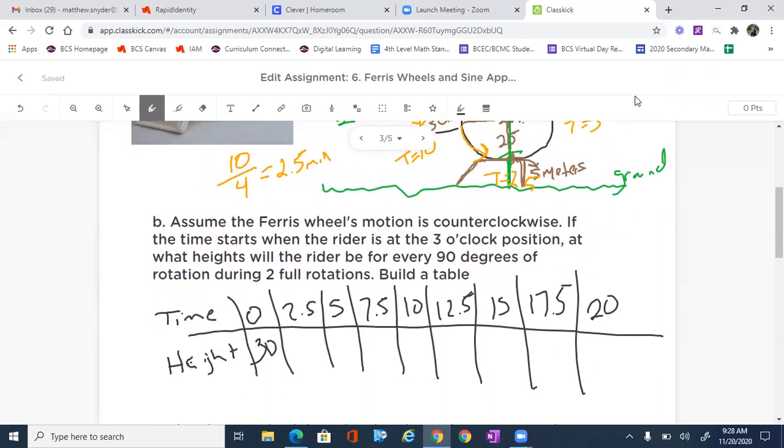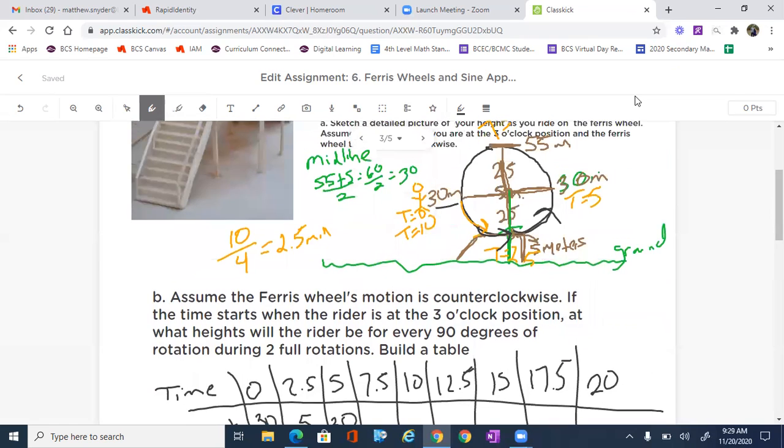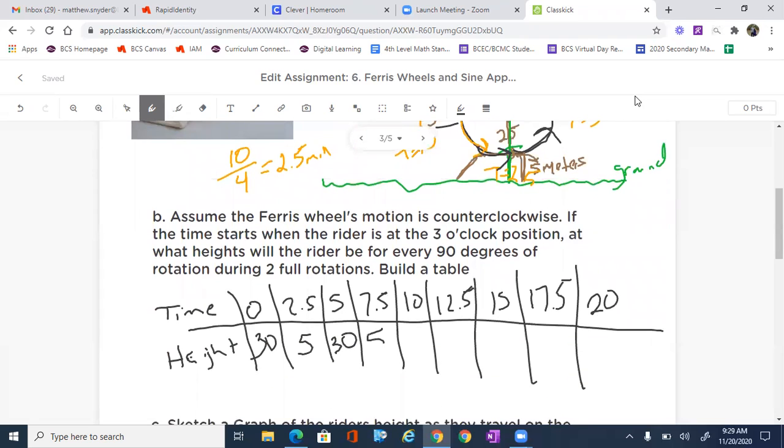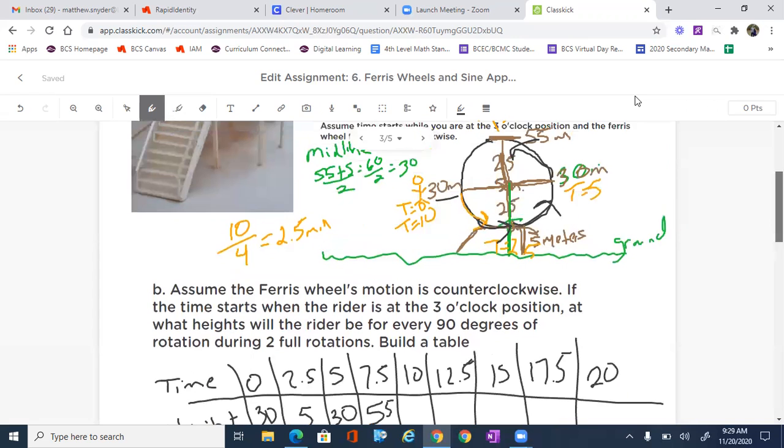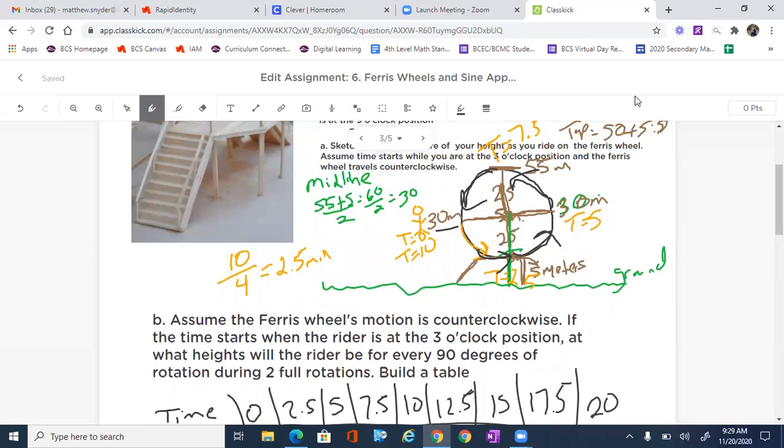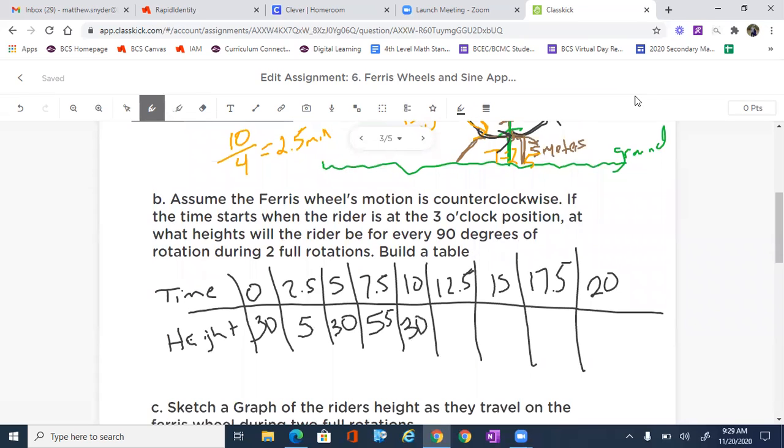So that is 30 meters. And then we go all the way down to a height of five meters right down there. And then we go back up to 30 meters. And then once we're at 30 meters, we go all the way back up to 55. And then at 10 minutes, we go right back down to 30. Now notice there's the period. So this is our period because we start back over. There's one period, which is the same thing as one rotation.